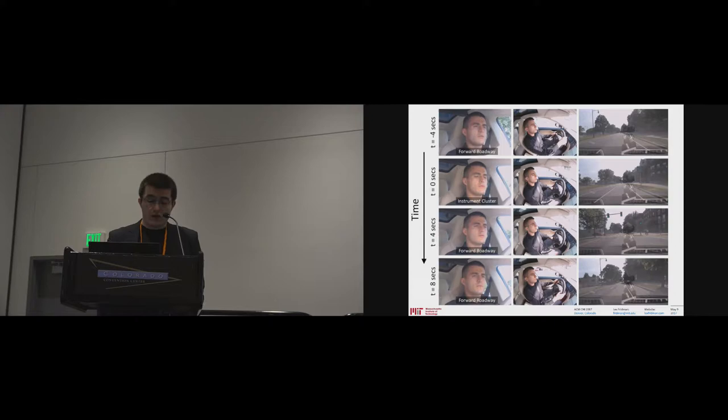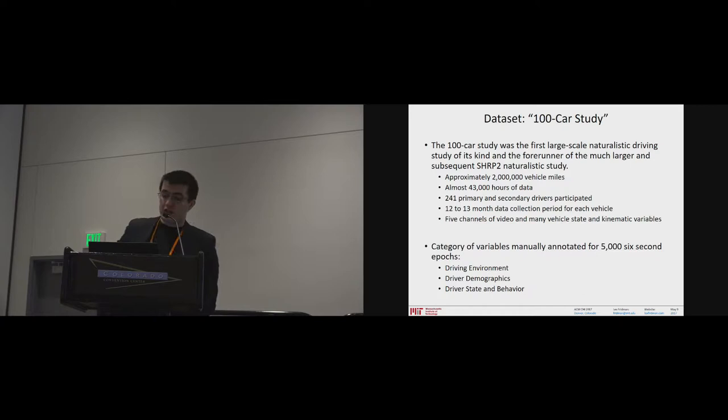So what is the data set we're working with? Time is in the y-axis going down. And the six second periods of time of different glances through time. So forward roadway, instrument cluster, forward roadway, forward roadway, and so on at 30 frames a second. So for this particular paper, the data set we use is called the 100 car study. It's one of the original naturalistic large scale studies. It has approximately 2 million vehicle miles, almost 43,000 hours of data. 241 drivers. And there's been selected 5,000 six second epochs of time. Periods of time where a lot of different things were annotated. Human annotated. So it's double annotated and mediated for various variables in three categories.